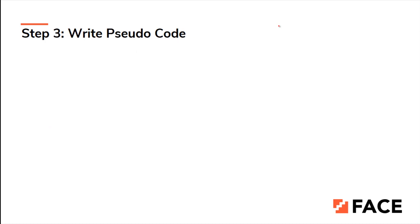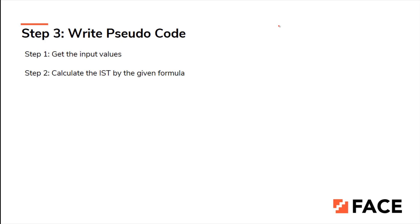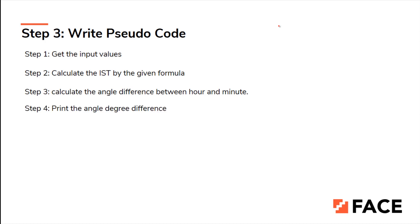Now let's write the pseudo code. First, get the input values. Then calculate IST using the given formula. Then calculate the angle difference between the hour and minute hand using the formulas we discussed. Finally, print the angle difference with 2 decimal points.